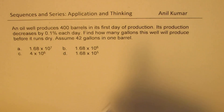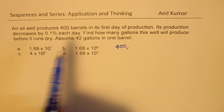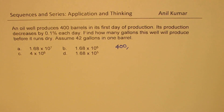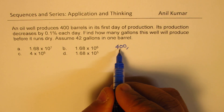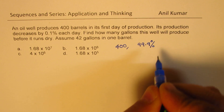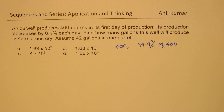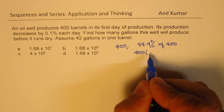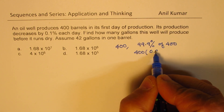As we understand, initially it produces 400 barrels. Now when we say that its production decreases by 0.1% each day, it means the next day it will be 99.9% of 400. So that would be 400 times 0.999.